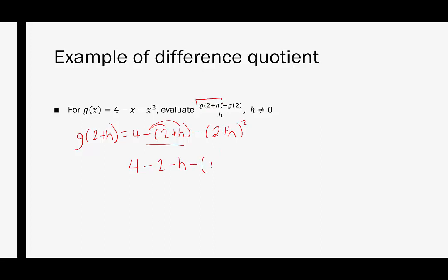When I square the binomial, remember it's the first term squared, the product of the two terms doubled, and then the second term squared. Now that I've done that, I'm going to distribute the subtraction sign — that's going to change the three signs, giving us 4 minus 2 minus h minus 4 minus 4h minus h squared.